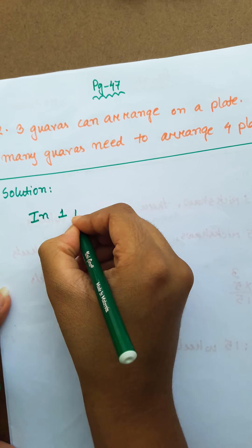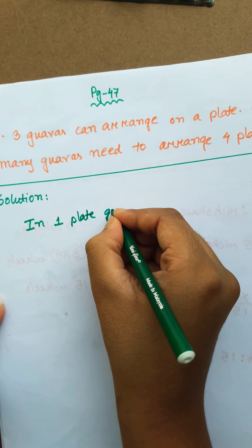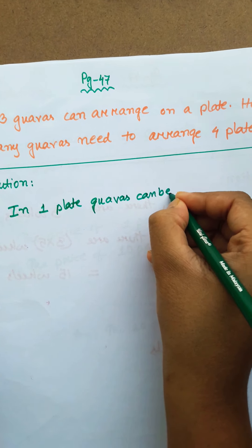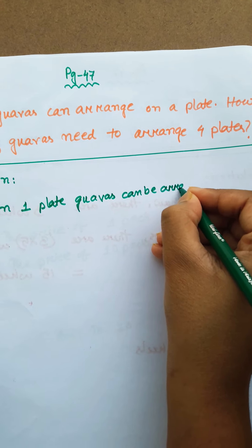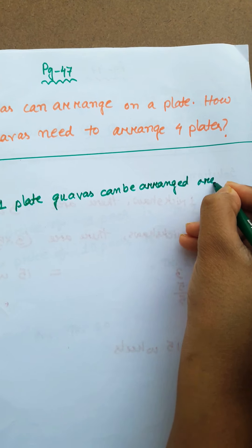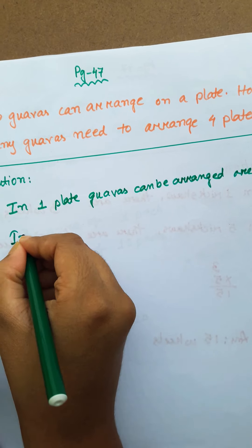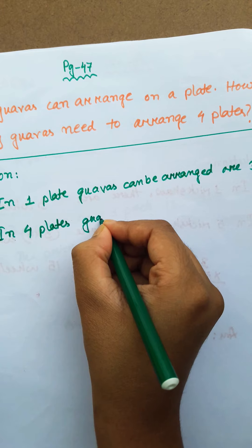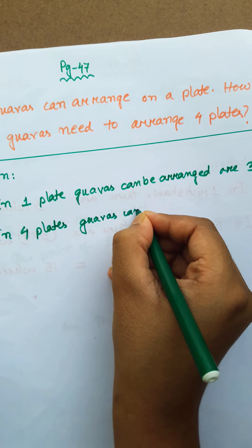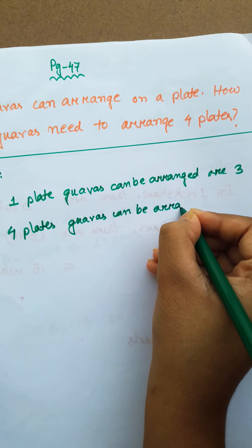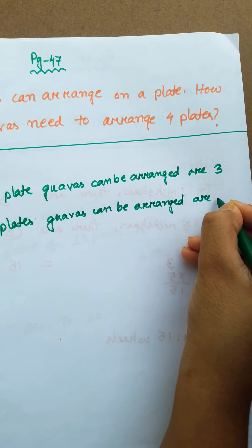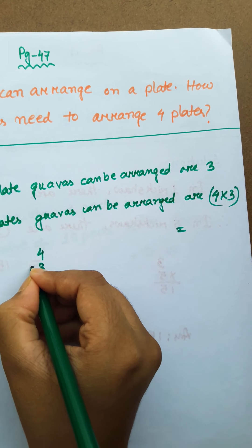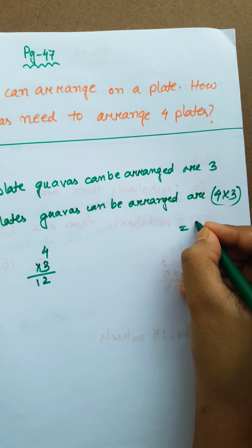In 1 plate, guavas can be arranged: 3. Therefore, in 4 plates, guavas can be arranged on 4 into 3. We know 4 into 3 is 12.